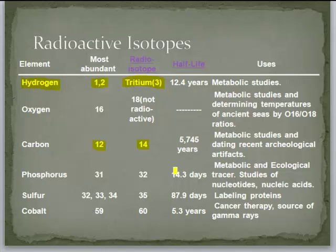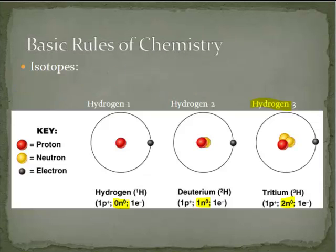As you add in more and more neutrons, the nuclei of these hydrogen atoms are going to become unstable — that's what is meant by radioactivity. Hydrogen 3, called tritium, has so many neutrons it's unstable. It's going to break down over time, become something else, and let off radioactivity.